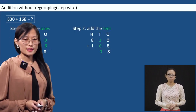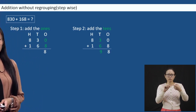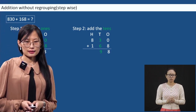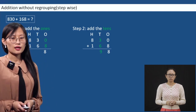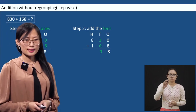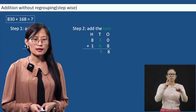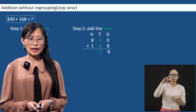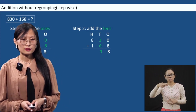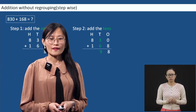Now we have step two. Here we will add the tens. The first one has been done. Now in the second step, we will add the tens: three plus six — six plus three is nine.